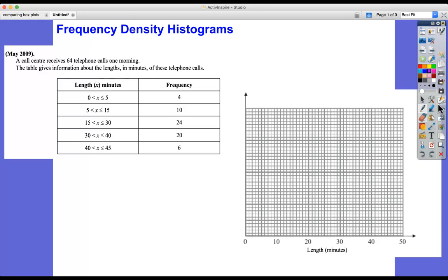Now our job is to put these into a frequency density histogram. What you don't want to be doing is the following: lots of candidates would go back to their key stage three knowledge and they would think, okay, well length in minutes is on the x-axis, frequency on the y-axis. Let me just stress this is not what you want to be doing.